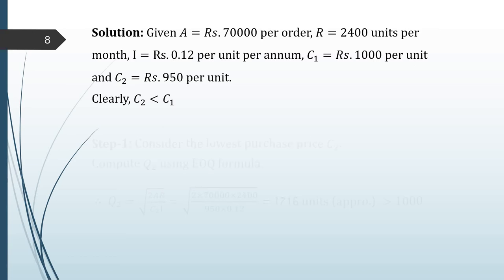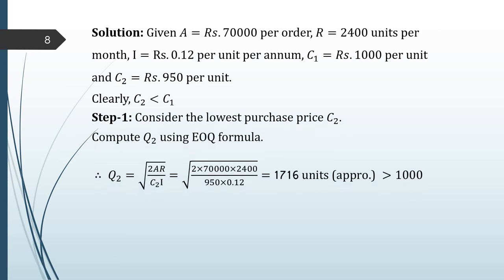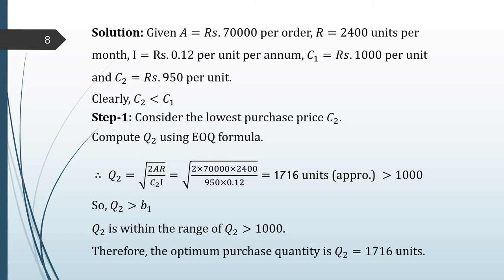Clearly C2 is less than C1. Step 1: the algorithm says to start with the lowest purchase price C2 and compute Q2 using the EOQ formula — that is, Q2 = sqrt(2AR / (C2·I)). Plugging in all values gives Q2 = 1716 units (approximated to integer quantity). Since Q2 is greater than B1 = 1000, Q2 is within the valid range. Therefore, the optimum purchase quantity is Q2 = 1716 units, which will minimize the total cost of the inventory system.